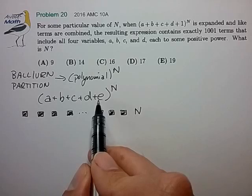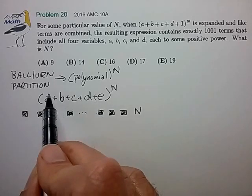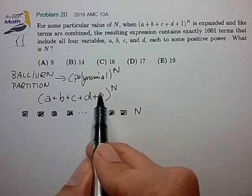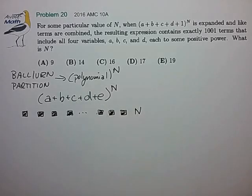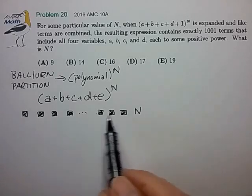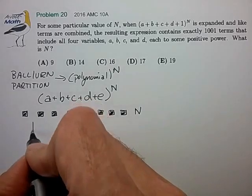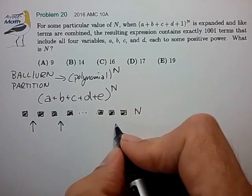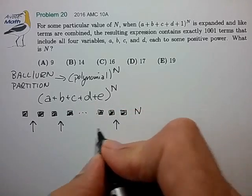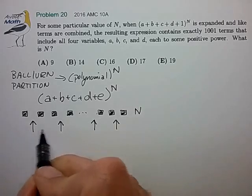And our task is to divide this pile of n markers among the five variables. And we also have the constraint that we want to have at least a power of 1 with each of the variables. So we're not going to accept a power of 0 for any of the variables. So this turns out to be a partition problem now where we have these n markers and we're going to try to decide how we can partition this pile of n markers into five piles.